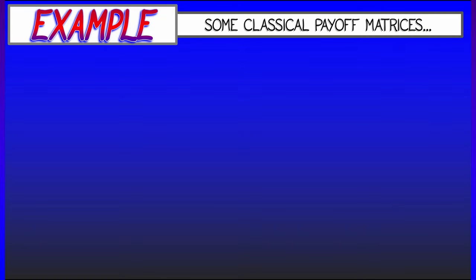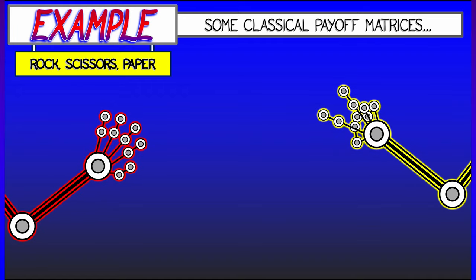All right, let's take a look at a couple of classical games and their payoff matrices. The first, of course, being Rock, Scissors, Paper.